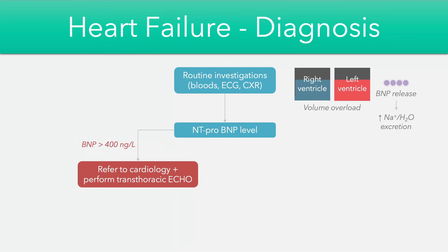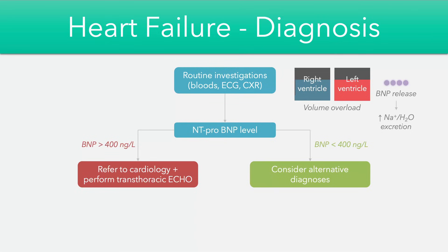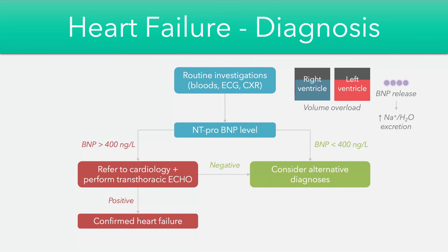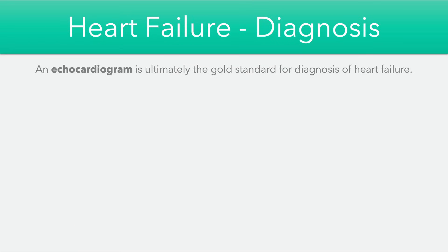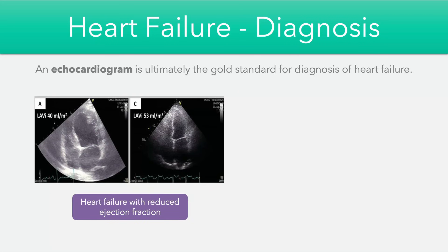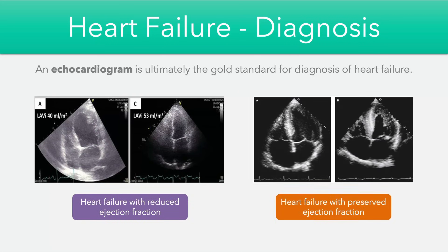If the BNP value is above 400 nanograms per litre, we should refer to cardiology and perform an echocardiogram; if it's less than 400 nanograms per litre, we should consider alternative diagnoses. If the echo returns positive for heart failure we can confirm the diagnosis; if negative, we consider alternatives again. The BNP level helps to stratify patients, but the echocardiogram is ultimately what leads to the diagnosis — and it can help distinguish between heart failure with a reduced and a preserved ejection fraction.